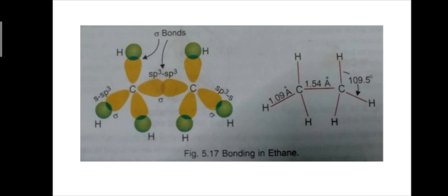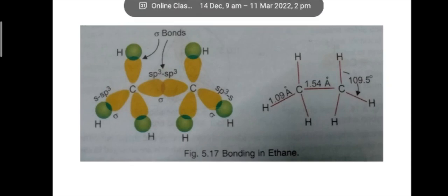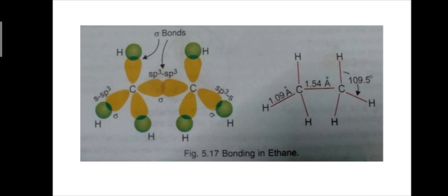All carbon-hydrogen bonds and the carbon-carbon bond in ethane are sigma bonds. Electron diffraction and spectroscopy studies show that the H-C-H and H-C-C bond angles are 109 degrees 28 minutes, because in ethane each carbon also has sp3 hybridized orbitals. Therefore, the geometry of each carbon atom is tetrahedral.